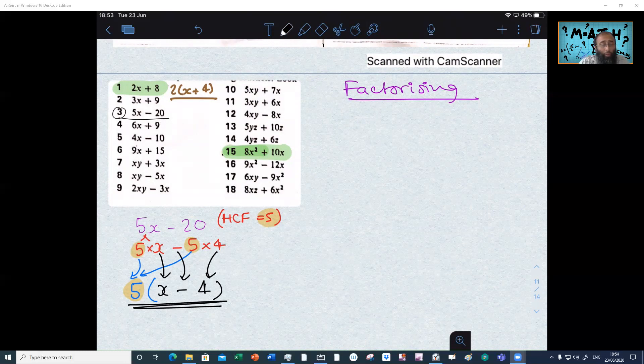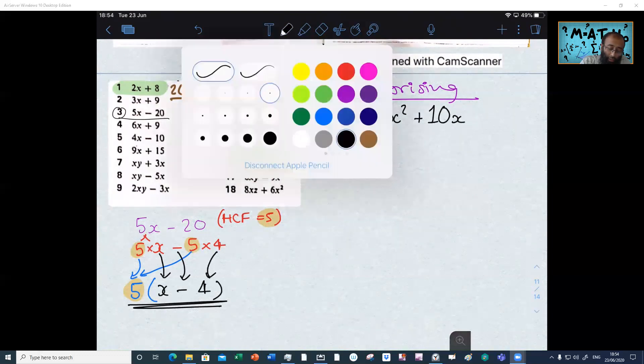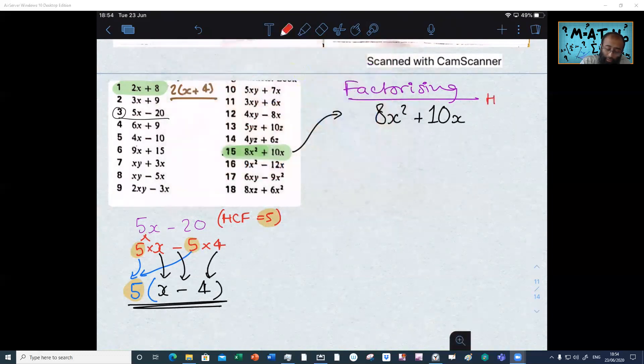Okay, the next one we got there is 8x squared plus 10x. I think we could do that question. So number 15, we could do that question. Let's copy that out. So 8x squared plus 10x. Now, we look at this question. What is the highest common factor for this question? Would it be 2?